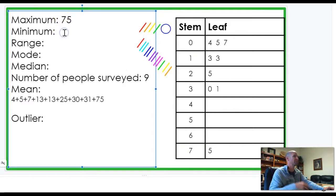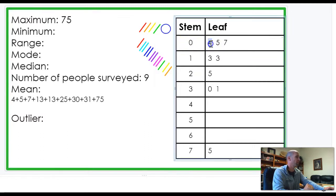The minimum is the smallest number. So, that would be in the top row where you have a zero in the tens and a four in the ones place. So, that's just the number four.